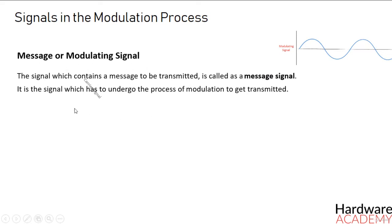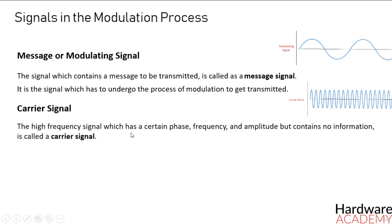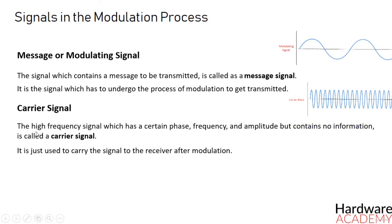The second signal is the carrier signal, which is a high frequency signal which has a certain phase, frequency and amplitude, but contains no information. It is an empty signal, it is just used to carry the signal to the receiver after modulation.